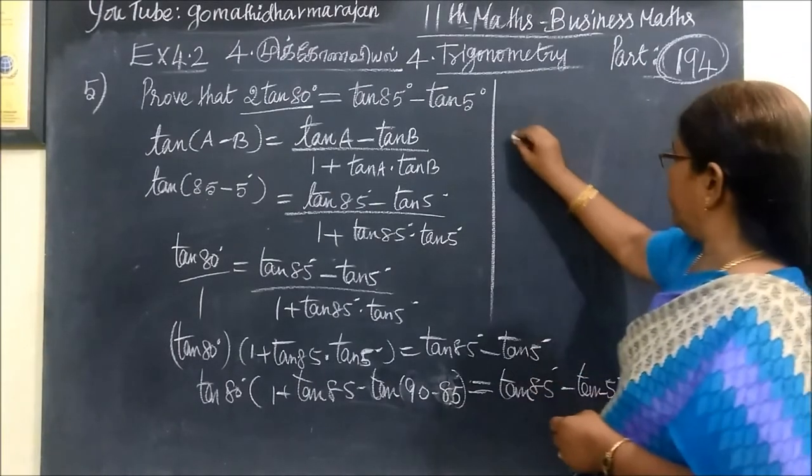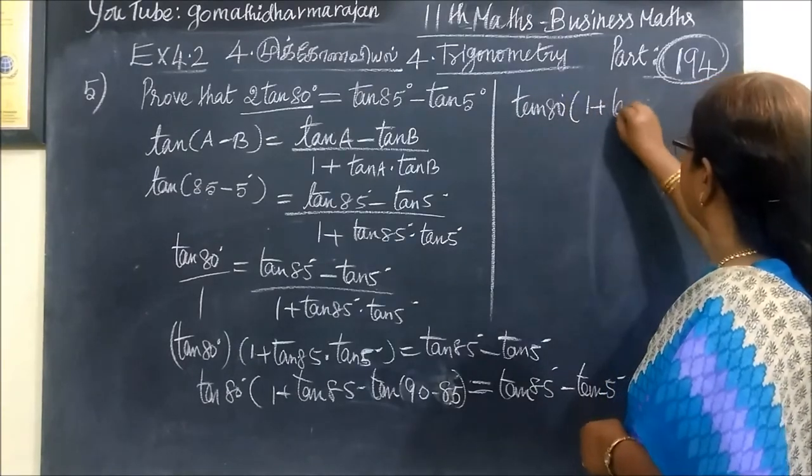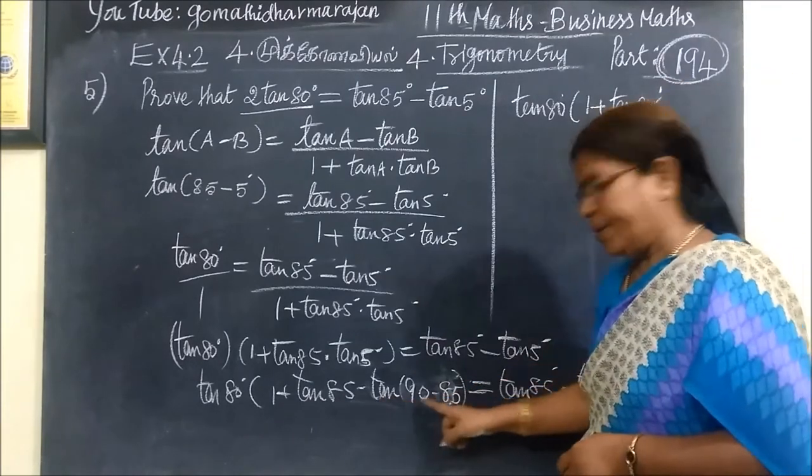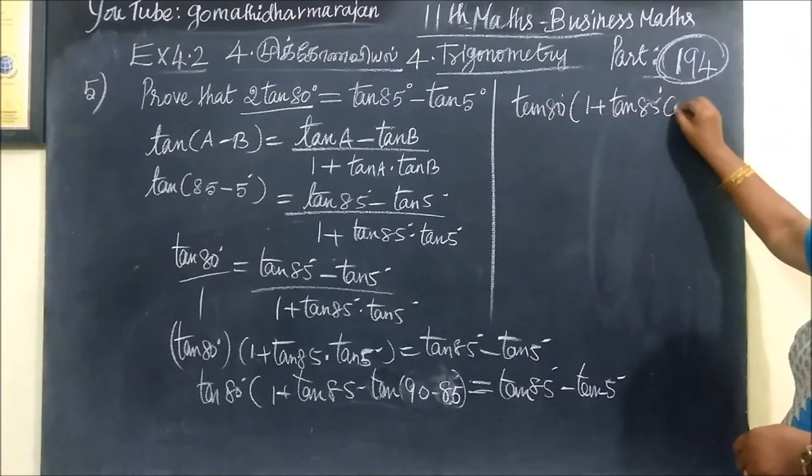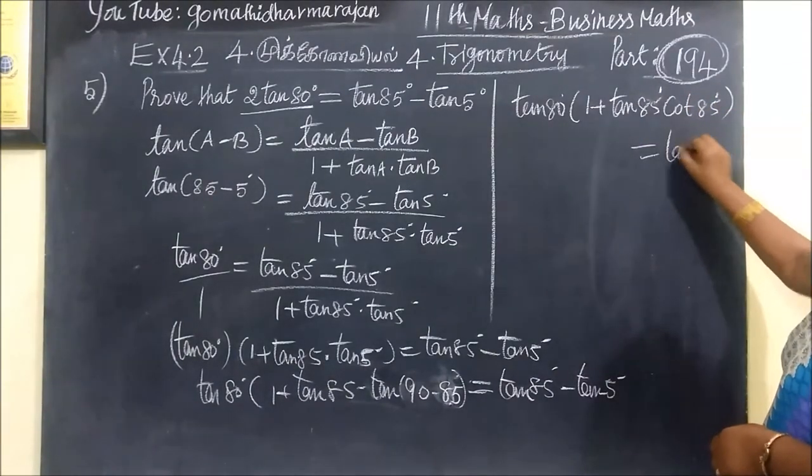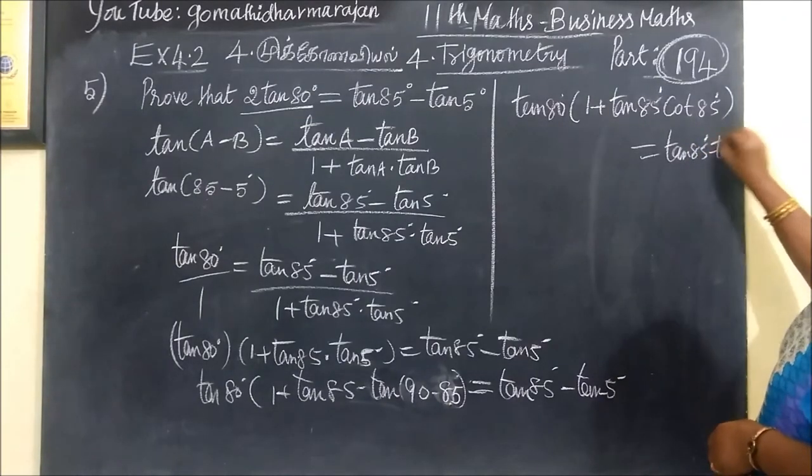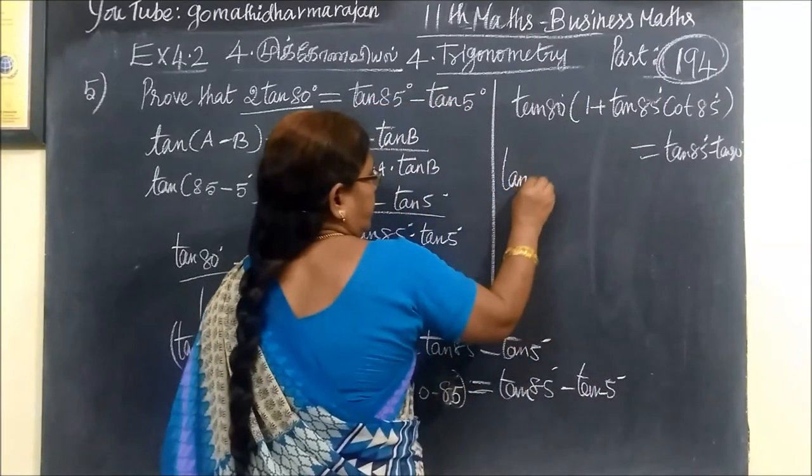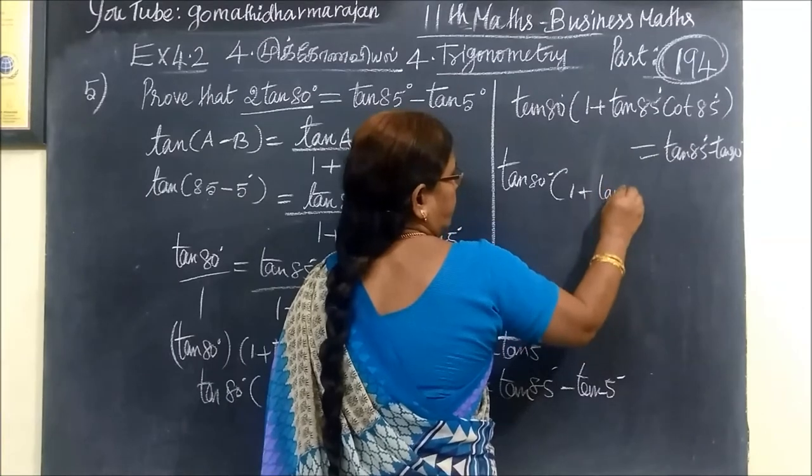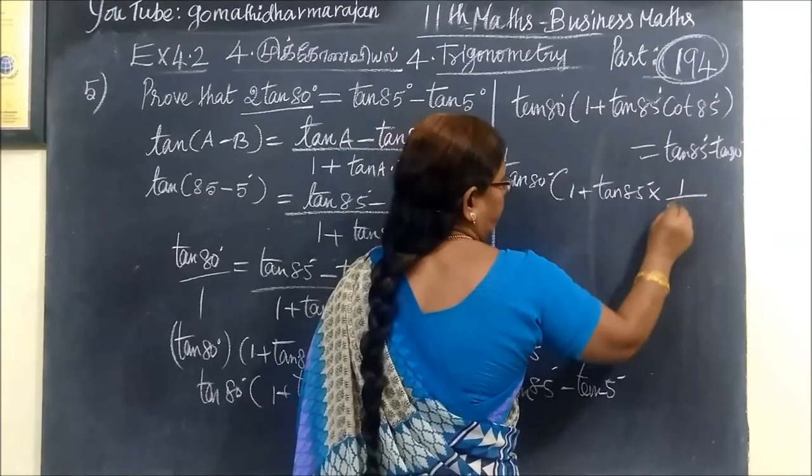That means tan 80 bracket 1 plus tan 85 equals tan 85 minus tan 5. This is the answer. Tan 85 can be written as cot 5.